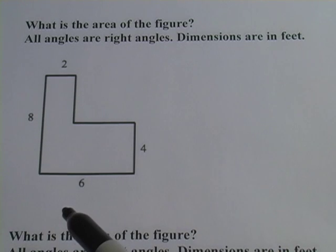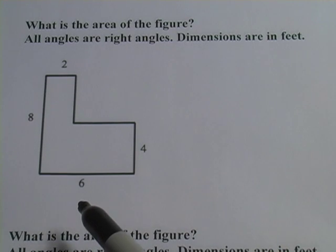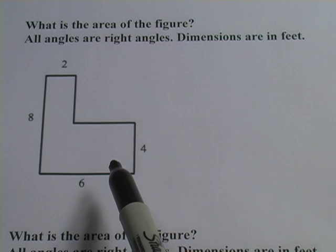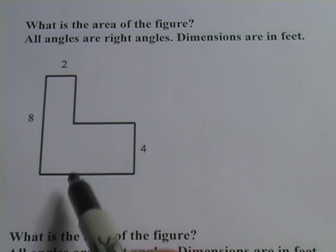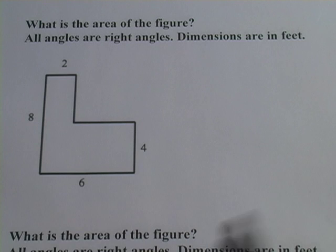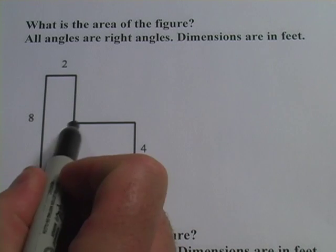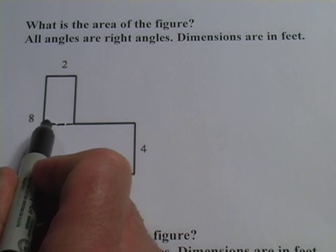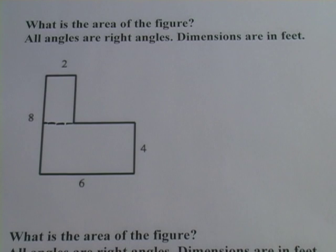And then we have this weird-looking L-shaped thing. What you want to do to figure out the area here is split this picture up into shapes that you do know how to figure out the area for. What I'm going to do is just draw a line right here and split this into two rectangles because I know how to find the areas of rectangles.